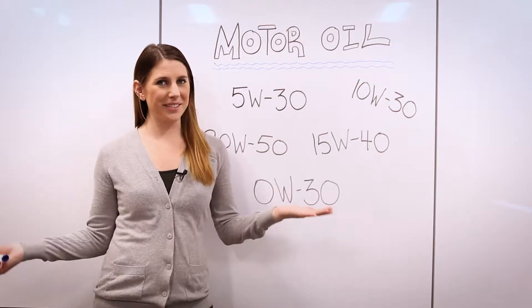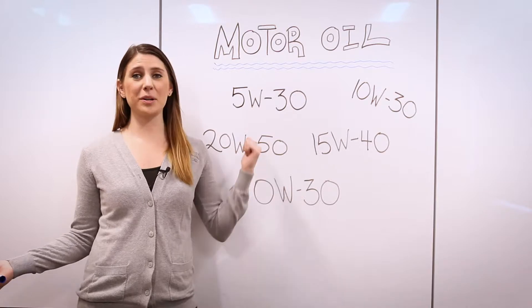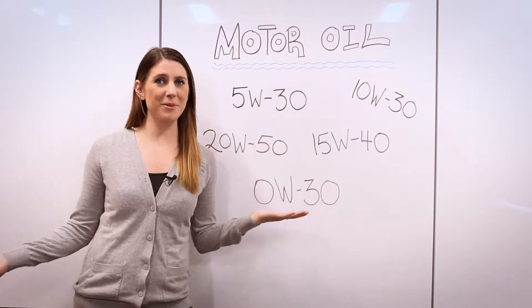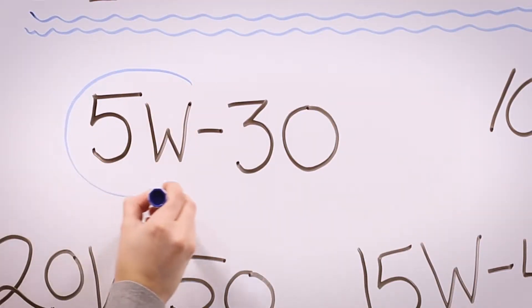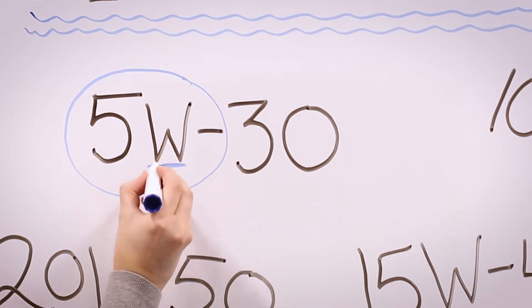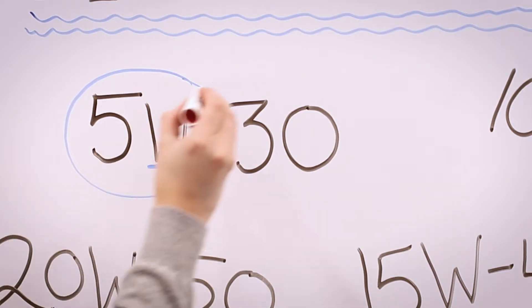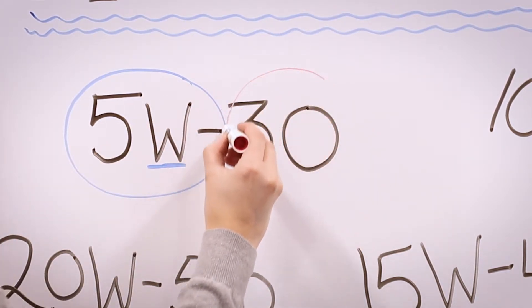So why are there two sets of numbers? Well, these are multi-grade oils, which means they perform at different viscosities depending on the temperature. The first number tells you the oil's viscosity to flow in cold temperatures, with the W standing for winter. The second number tells you the oil's viscosity to flow when the engine is hot.